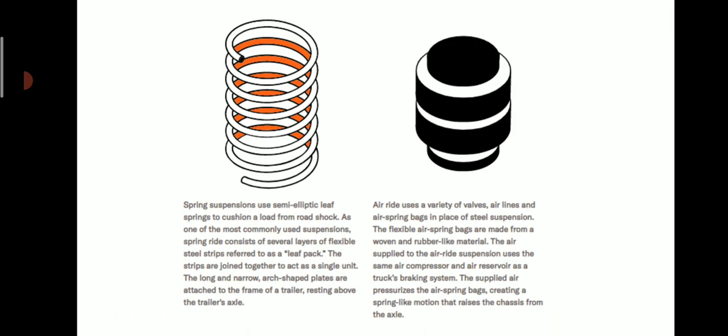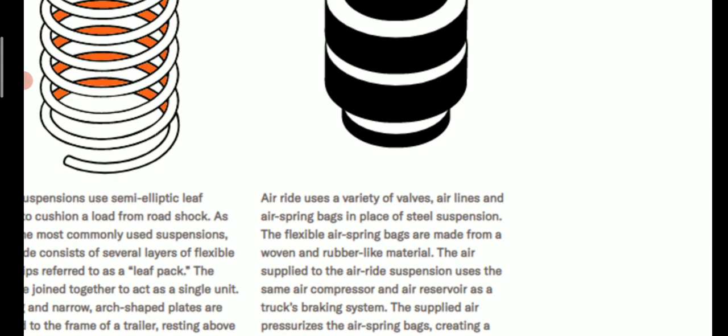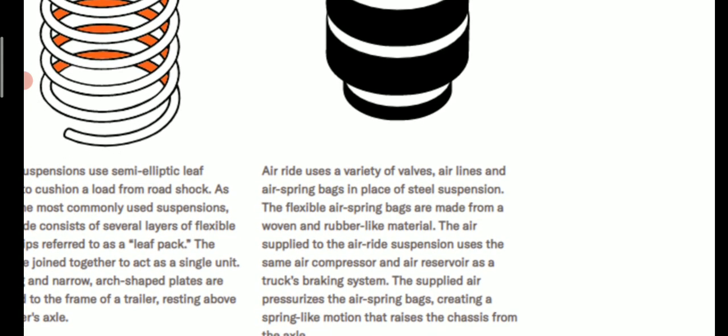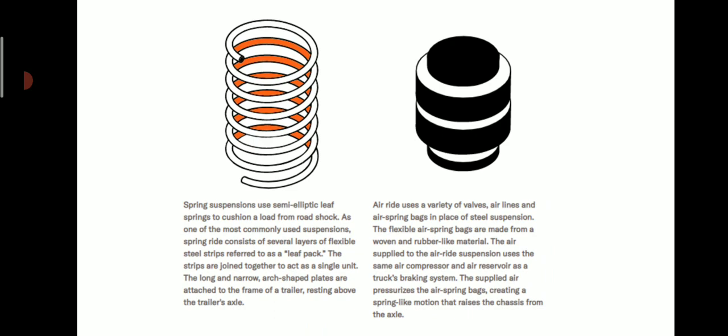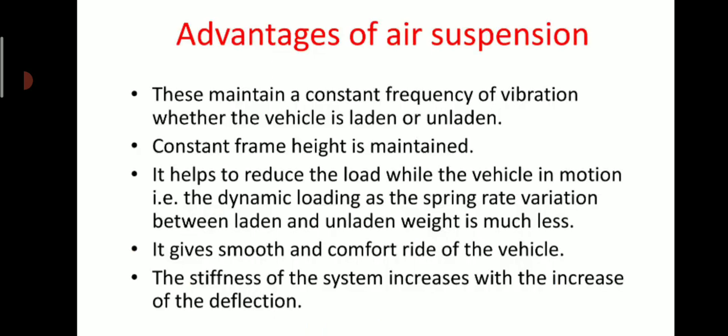In the case of air suspension, air ride uses a variety of valves, airlines, and air spring bags in place of steel suspension. The flexible air spring bags are made from woven rubber-like material. The air supplied to the air ride suspension uses the same air compressor and air reservoir as the truck's braking system. This is, in short, the distinction between spring and air suspension systems.